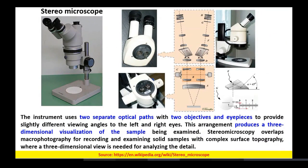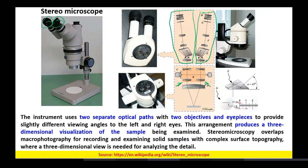In a stereo microscope, both eyepieces give different images because there are two separate sets of objective and eyepiece lenses. One side of the optics gives slightly different information compared to the other. This arrangement produces a three dimensional visualization of the samples.